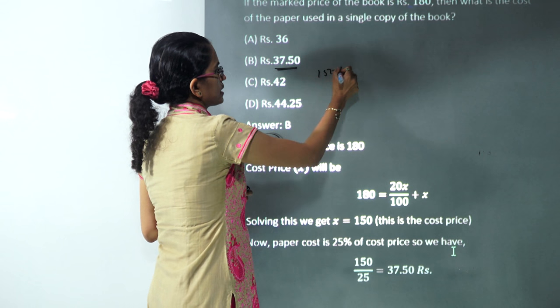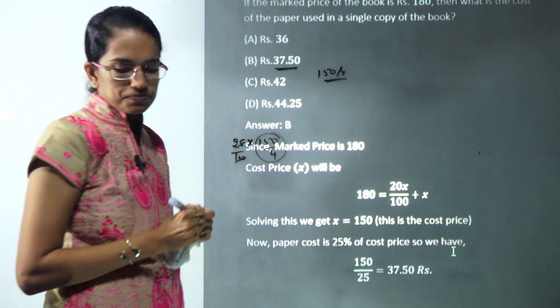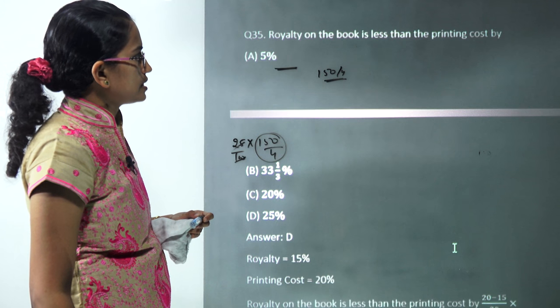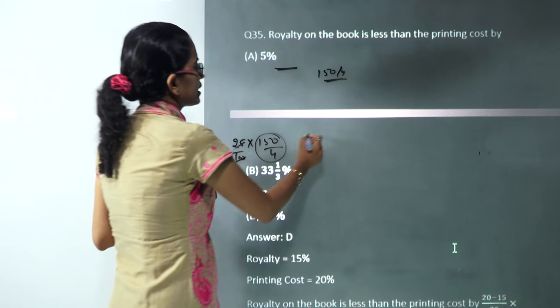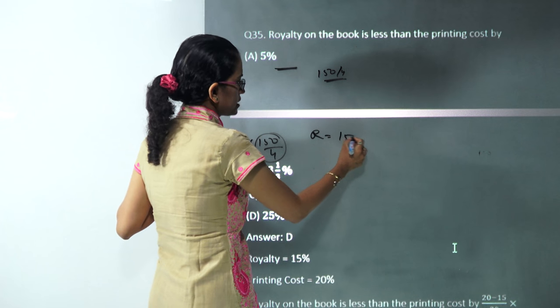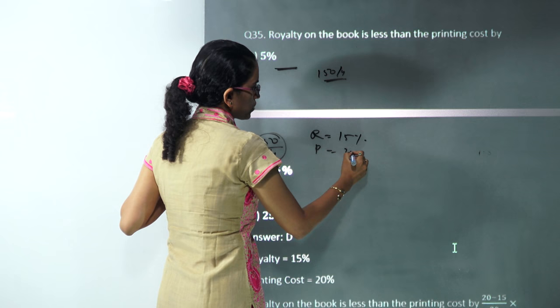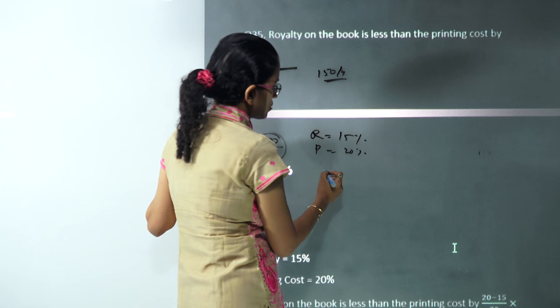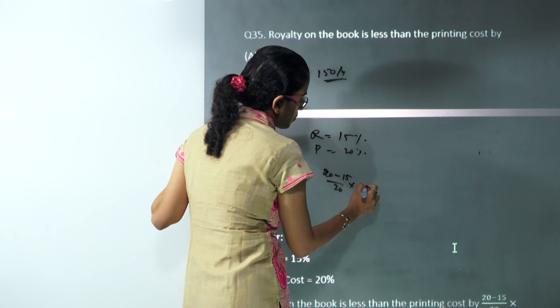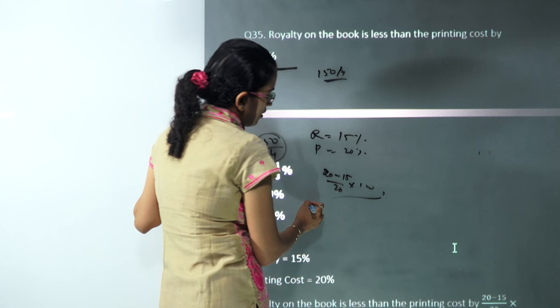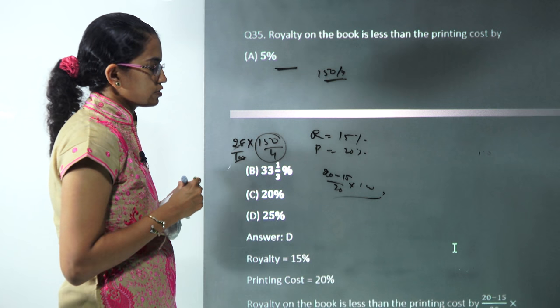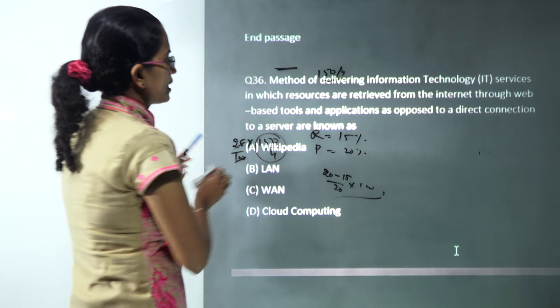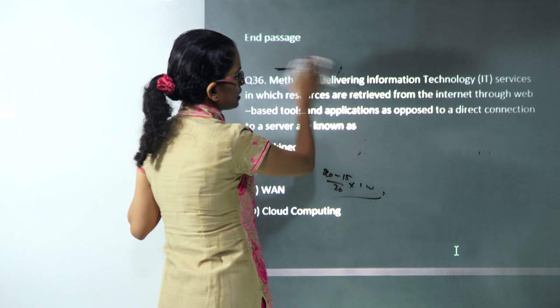The next question: the royalty on the book is less than the printing cost by how much? Royalty was 15% and printing cost was 20%, so that would be 20 minus 15 by 20 times 100. That comes out to be 5 by 20 times 100, that's 100 by 4, that's 25%. So 25% would be the correct answer here.